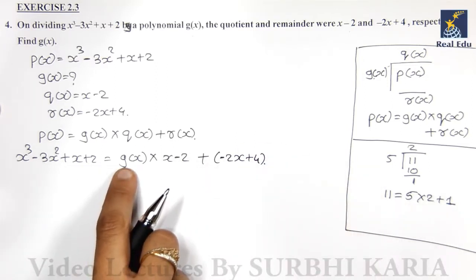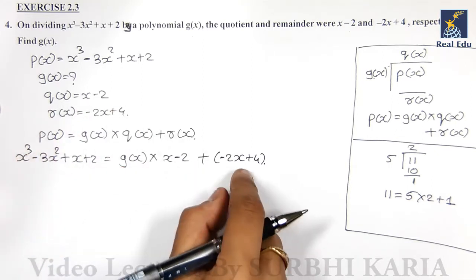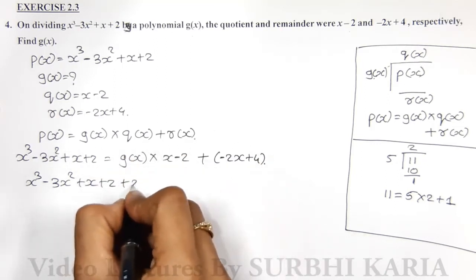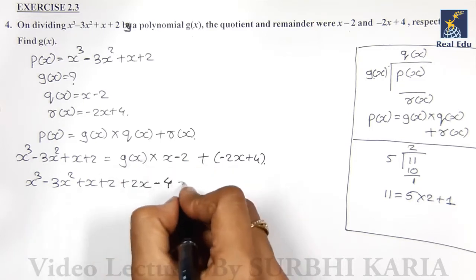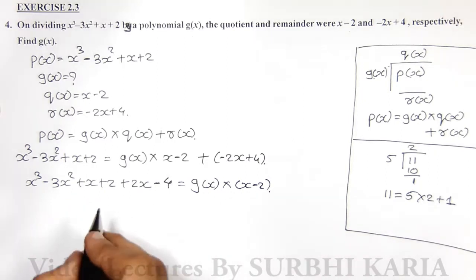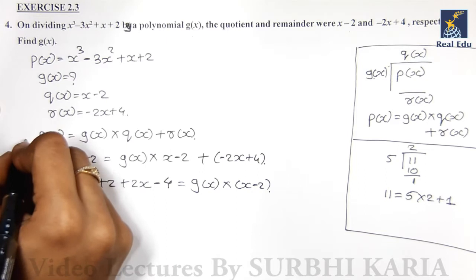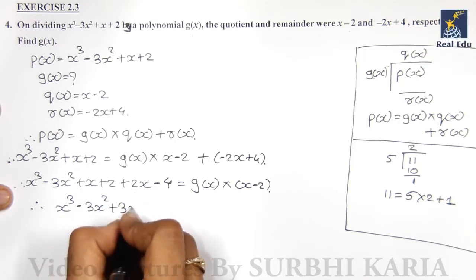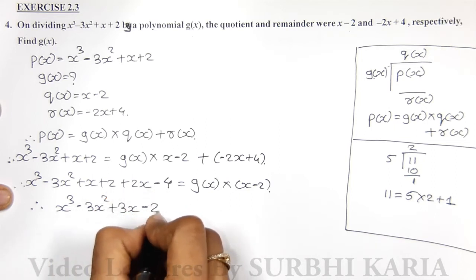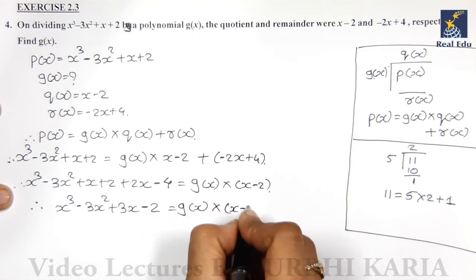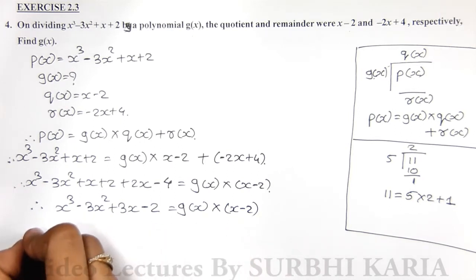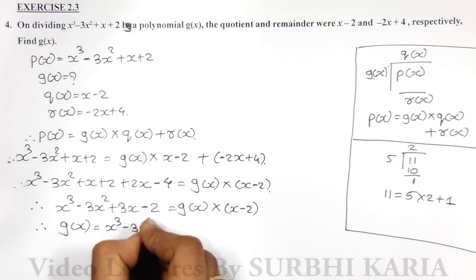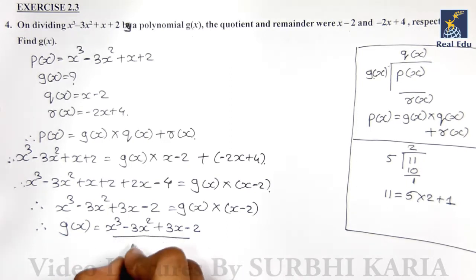To find g(x), we make it the subject of the formula and shift the remaining terms to the other side. Since x minus 2 and g(x) are in multiplication, we shift: x cubed minus 3x squared plus x plus 2 minus (minus 2x) plus (4 becomes minus 4) equals g(x) times (x minus 2). Simplifying: x cubed minus 3x squared plus 3x minus 2 equals g(x) times (x minus 2). So g(x) equals x cubed minus 3x squared plus 3x minus 2 divided by x minus 2.